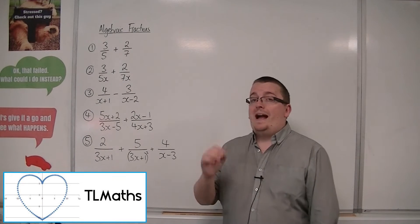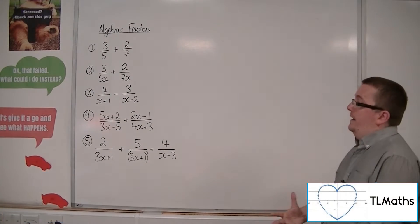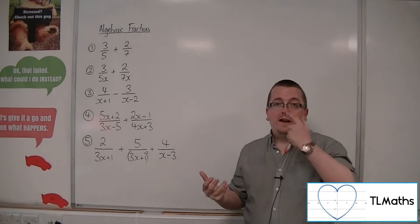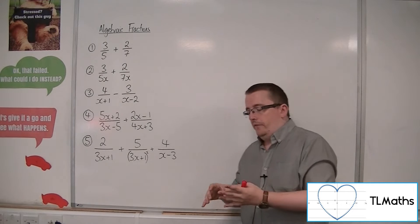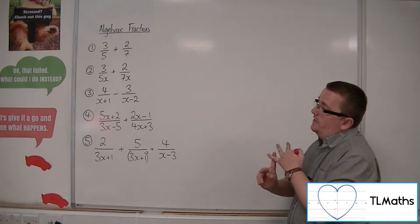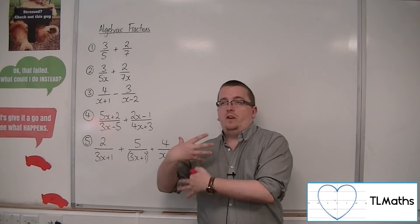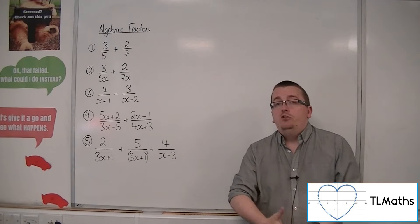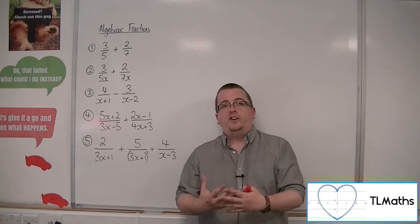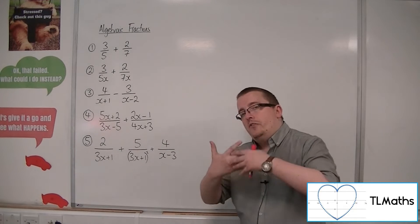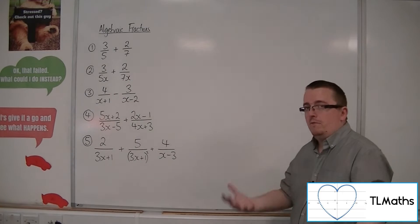In this video I want to look at adding algebraic fractions. Before we go into that, I just want to go back to adding normal fractions to make sure we've got the method sorted. The whole idea for adding fractions is to make the denominators the same. Because once you have something like 2 ninths plus 3 ninths, you know that you've got 5 ninths altogether — you can combine the fractions once the denominators are the same. And that works with algebraic fractions as well; it's the same concept.